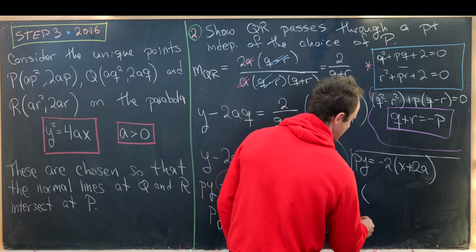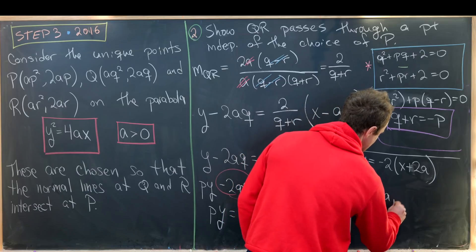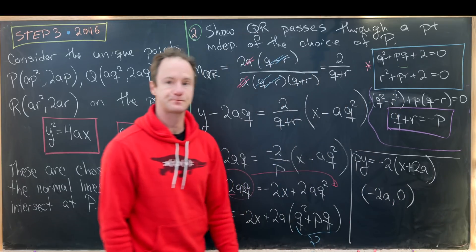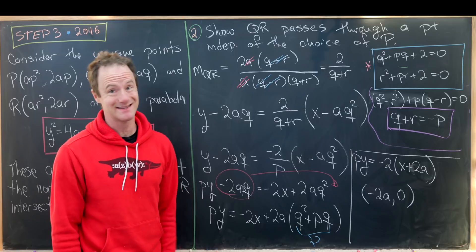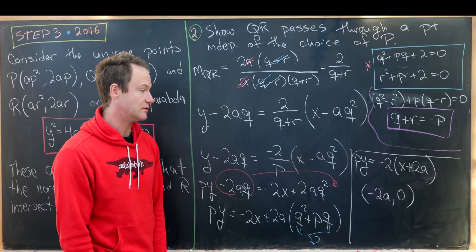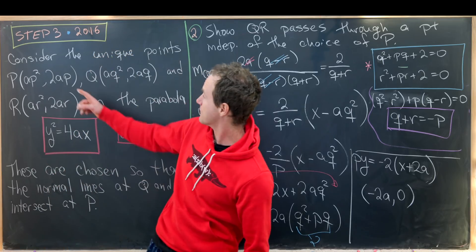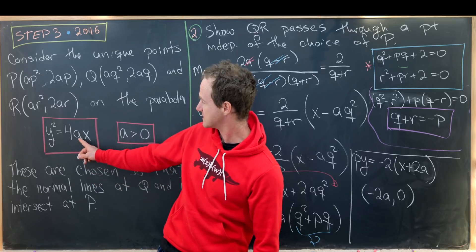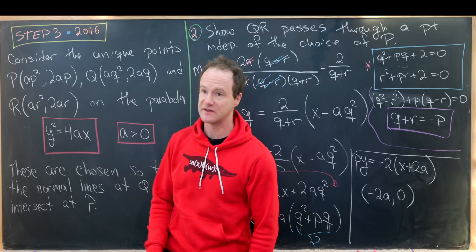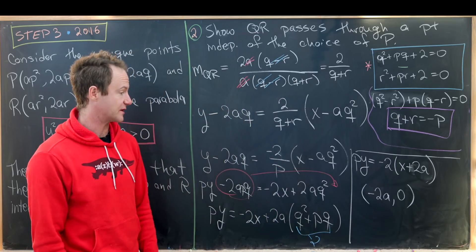But now we see that there's an obvious point that this line goes through and it is the X intercept. Notice this contains the point (-2A, 0) and that point doesn't depend on any value of P, any value of this point right here. It only depends on this number A which is defining the parabola. So that's pretty interesting.